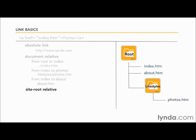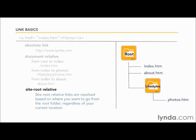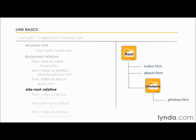Site root relative links are very similar to document relative links with just one major difference. Instead of resolving the link using a relative path from the file's current location, you resolve the link by going back to the root directory and working your way down. The root directory is identified by using a forward slash at the beginning of the link. So linking to the index.htm file would be resolved as forward-slash index.htm no matter where the link was created in your site. Site root relative links are great for pages that move around within your site a lot.